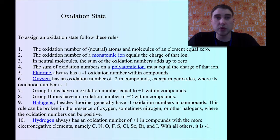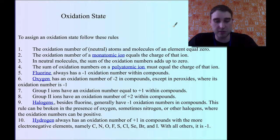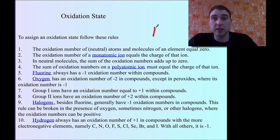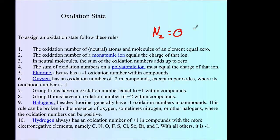There's a series of rules that we follow to figure out the oxidation number of a substance. The oxidation number of neutral atoms or molecules of an element is equal to zero. So something like nitrogen gas — the total oxidation number would be zero. Oxygen gas — the oxidation number would be zero.